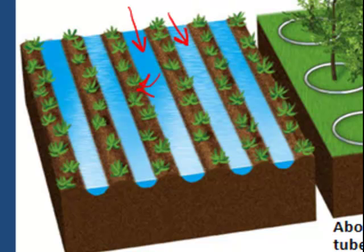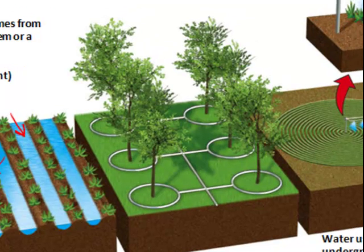The second method is drip irrigation, probably the best method and a common exam question. It's a system of above or below-ground pipes delivered to individual plants, so you're not watering ground without crops. It delivers water exactly where it needs to go and eliminates evaporation. The pipes have holes that allow water to seep out near the roots. For trees, what needs watering are the roots that extend out from the trunk, so water is supplied there and gravity-feeds down to be taken up.